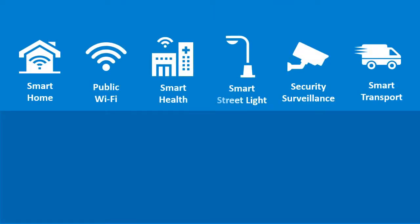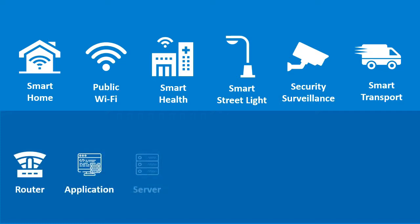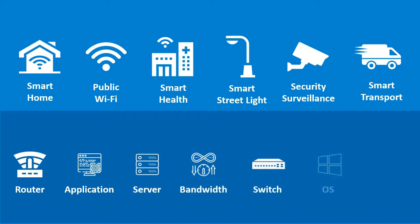Let's take an example of a smart city which relies on a robust IT infrastructure that manages its various components — routers, applications, servers, bandwidth, switches, virtualization, etc. To ensure smart city services are available, availability of these components is key. Failing of a component will affect the availability of a service and will affect human life in general.